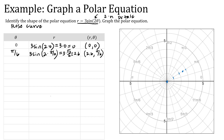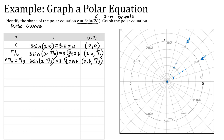Let's do the next point: theta equals two pi over six, which is pi over three. So I have three times the sine of two times pi over three, which is three times the sine of two pi over three. The sine of two pi over three is also square root of three over two, giving the same output of about 2.6. You might think it's the same point, but remember we are now at theta equals pi over three — a different angle. So I'm plotting 2.6 at pi over three, just a bit past that. I think we should be seeing a pattern here.